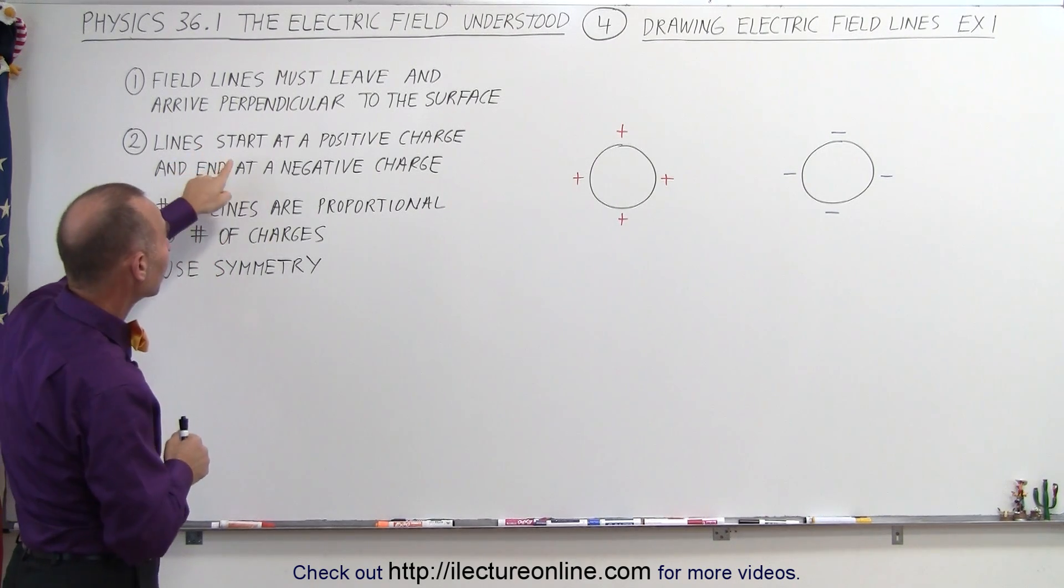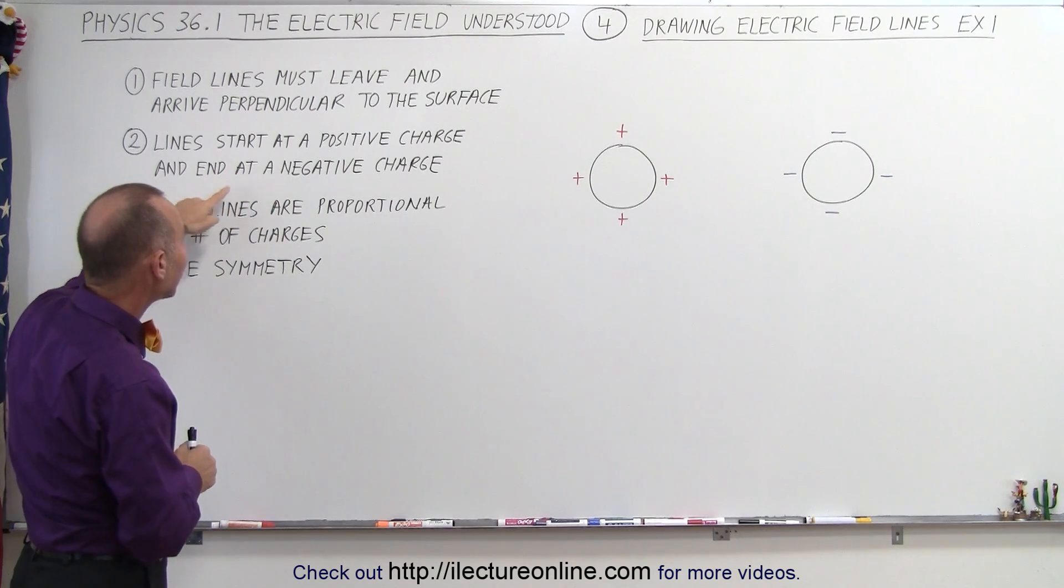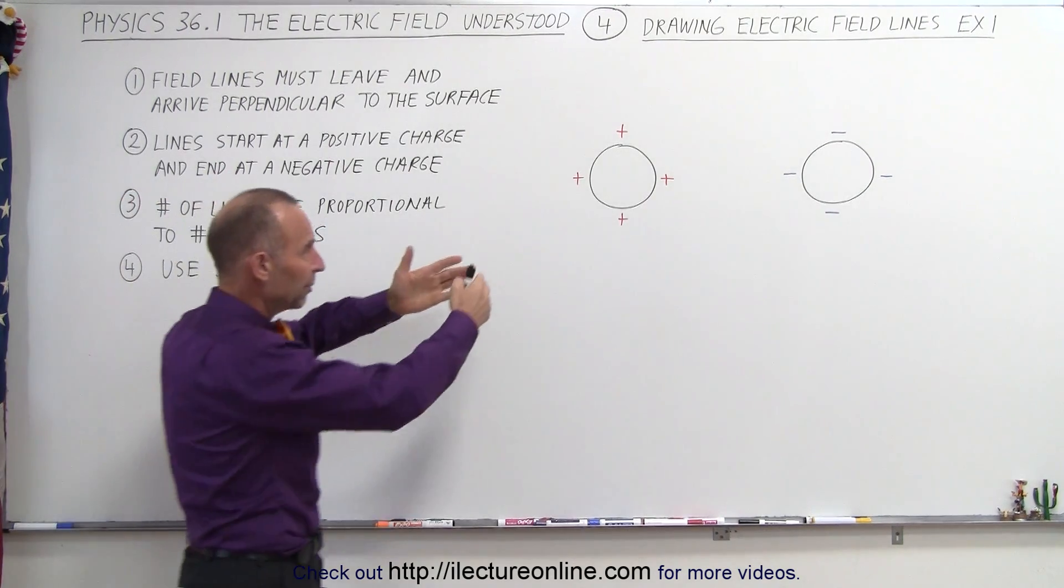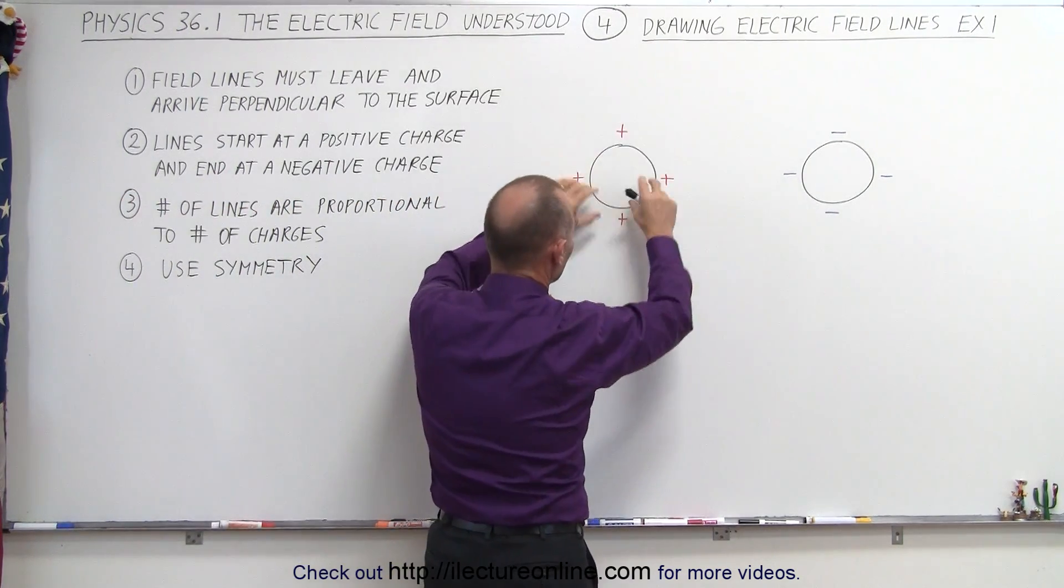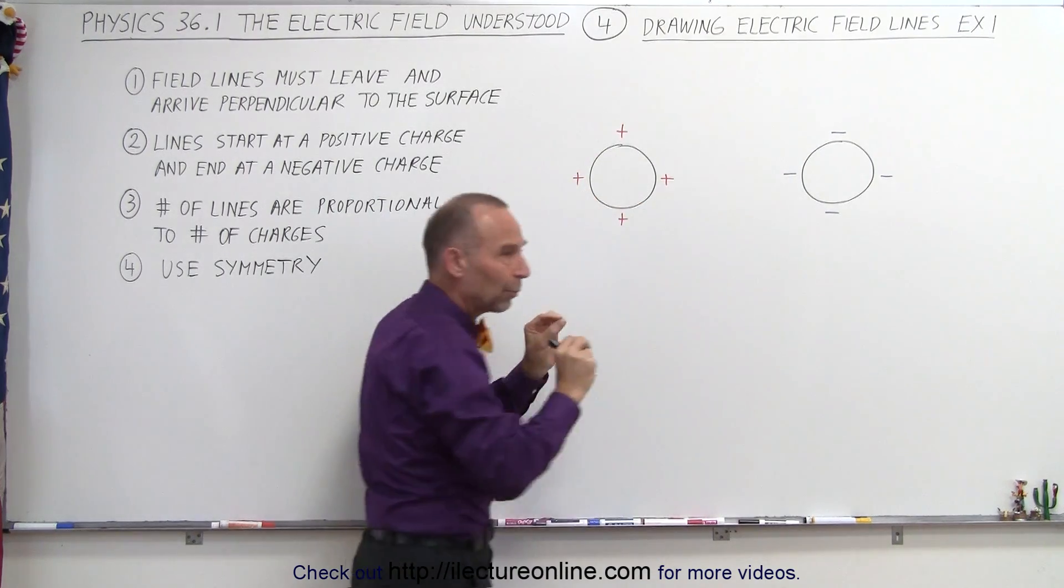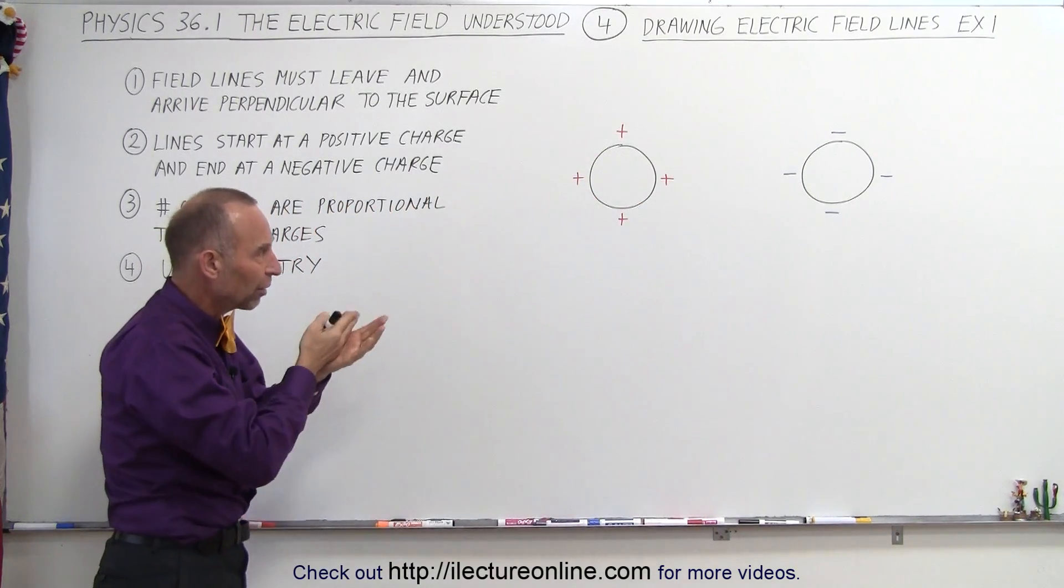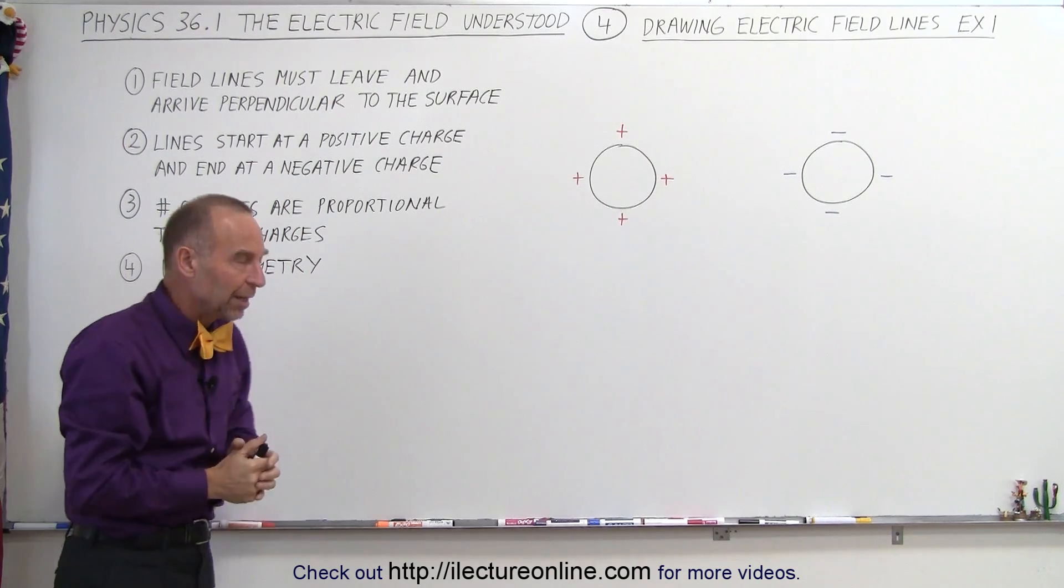Secondly, the lines always start at a positive charge and they end at a negative charge. So we do want to represent the charge on an object by individual charges so that we have targets. We can start from a charge and end at a charge, which makes it easier.